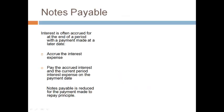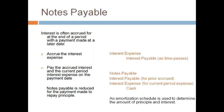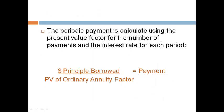Interest is often accrued at the end of a period with a payment made at a later date. Interest is accrued for the time passed at the end of the period. The interest for the prior period and the current period is paid when the payment is made. This is common when month-end financial statements are prepared and the payment is made quarterly.